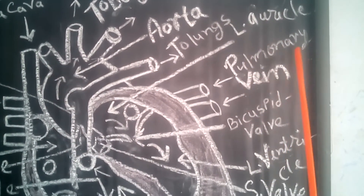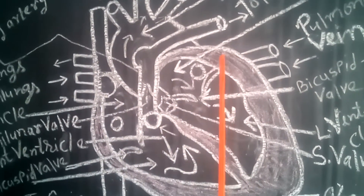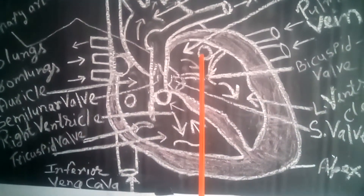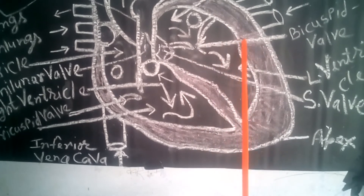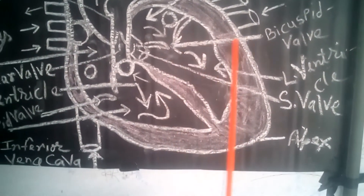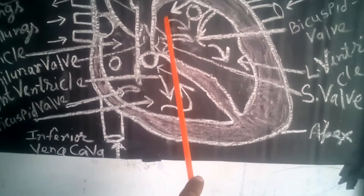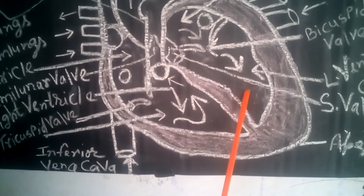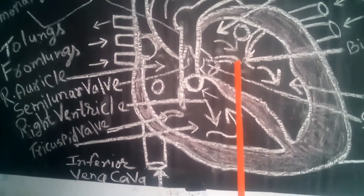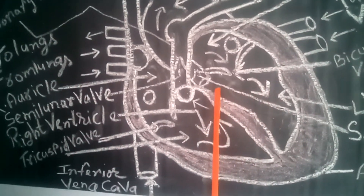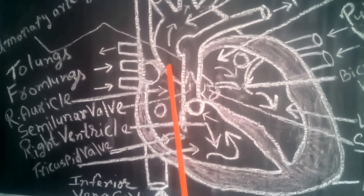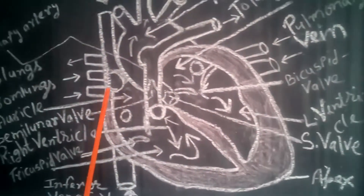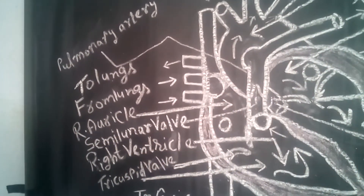Then, from the pulmonary vein, purified blood returns to the left auricle. When the left auricle is filled with pure blood, it contracts, the bicuspid valve opens, and blood goes into the left ventricle. When the left ventricle contracts, the bicuspid valve closes, and pure blood finds its path from the aortic arc to all parts of the body. This is the course of blood circulation in the human body.